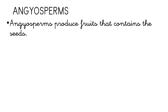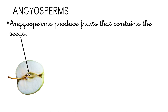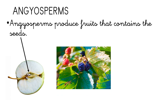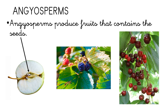Angiosperms produce fruits, and those fruits contain all the seeds. For example, the apple. The apple tree is an angiosperm because it produces an apple, and the apple inside has got the seeds. Some other examples of angiosperms, apart from the apple tree, are the blackberry bushes and the cherry tree.